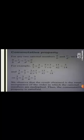The next property is the commutative property. According to this property, when two rational numbers a upon b and c upon d are multiplied together in any order, we get the same result. Whether you multiply a upon b with c upon d or c upon d with a upon b, the result is the same. This satisfies the commutative property.